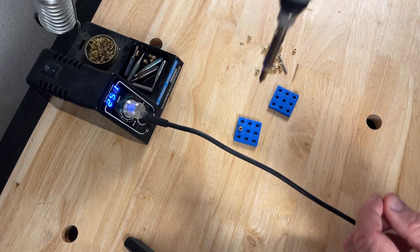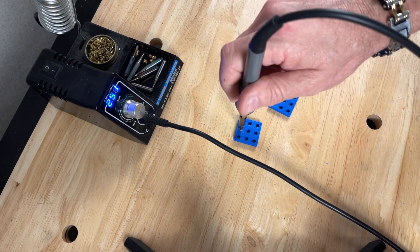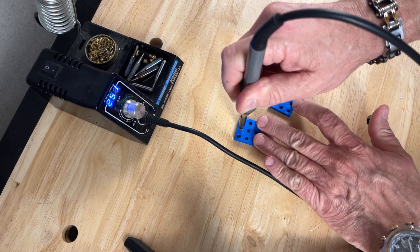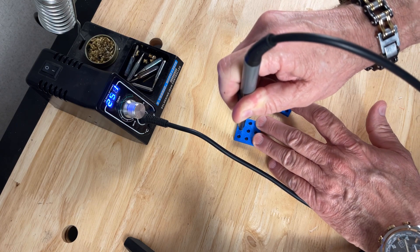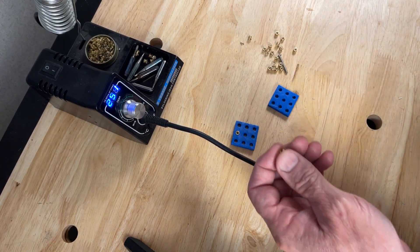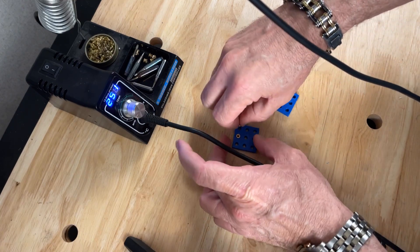So you get the part set into the hole like that, take your soldering iron tip, hold it on there, just put a little gentle pressure on it. And then as it heats up, you just push it down until it sets flush. There you go. That's all there is to it. Do a couple more here.